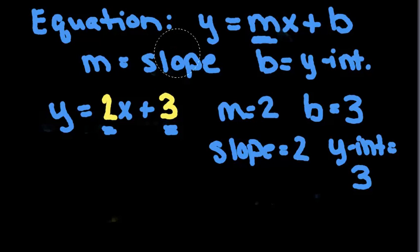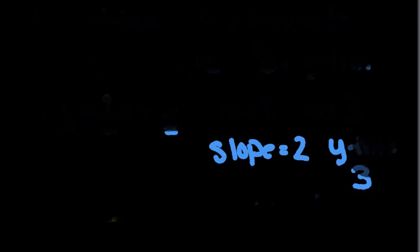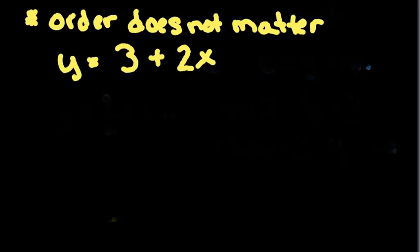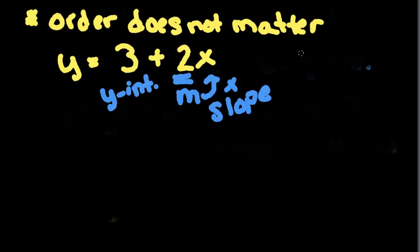Now, we are going to talk about things that we have to pay attention to when doing this type of problem. The first thing is that the order does not matter. So if I have y equals 3 plus 2x, I still have to figure out which one of these numbers is the slope and which one is the y-intercept. The one that sits next to the x is the m because it is next to the x. So this one is my slope, and this one is the y-intercept. So the slope is 2 and the y-intercept is 3.